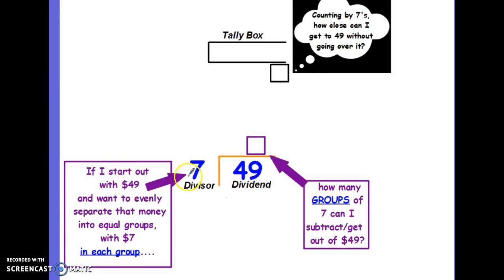Another example. If I start out with $49 and want to evenly separate that money into 7 equal groups, then I need to skip count by 7 until I get to 49. 7, 14, 21, 28, 35, 42, 49. Then I stop. I write down the answer I got to into 2 spots underneath the dividend and I count the tally marks to see what my quotient is. How many groups of $7 do I have? 1, 2, 3, 4, 5, 6, and 7.